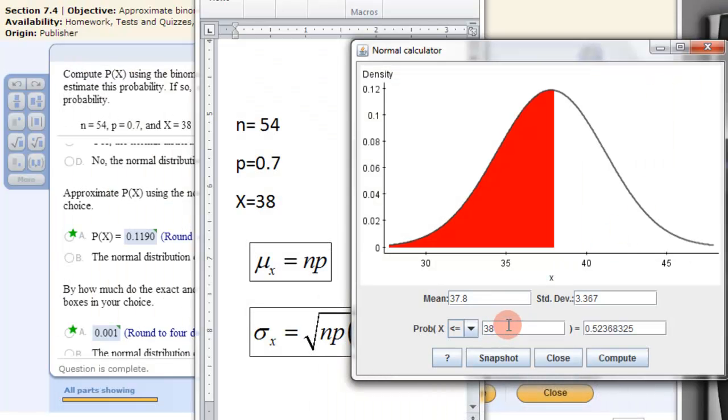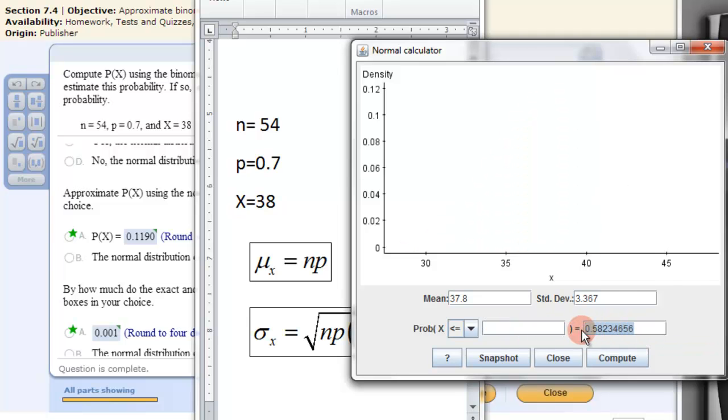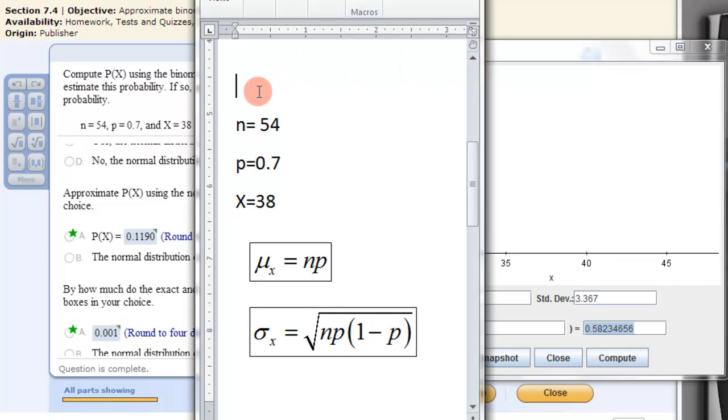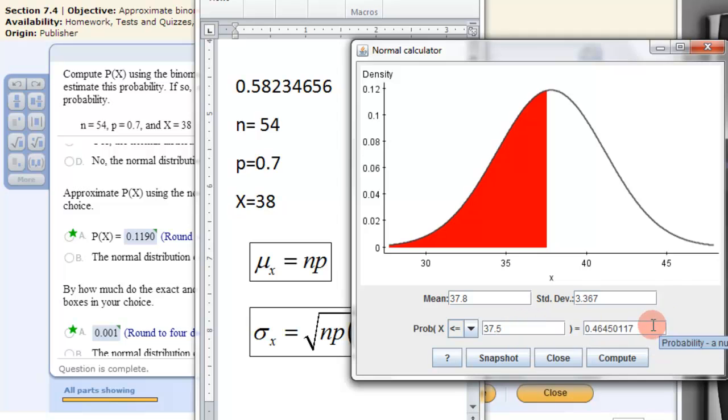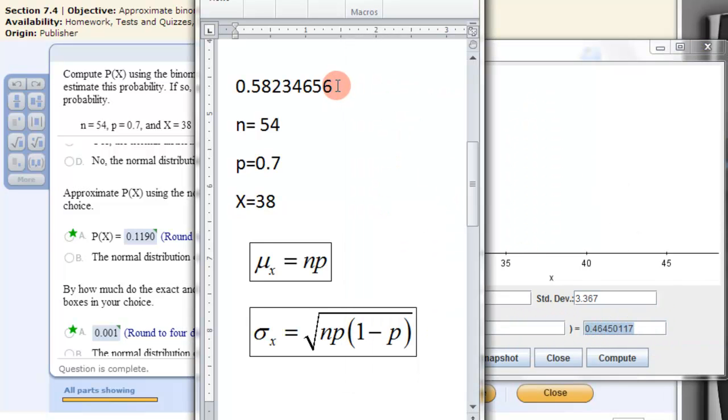So let's do the first one, 38.5. Then we'll write that down here. Keep that somewhere. And then we do the same thing with 37.5. And we take that number here and write it down as well.